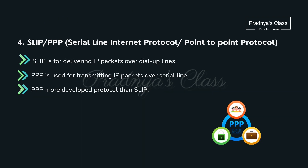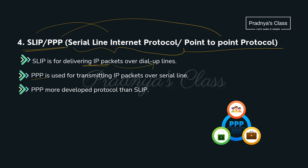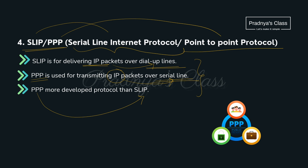Moving ahead to the fourth protocol: SLIP means Serial Line Internet Protocol and PPP means Point to Point Protocol. SLIP is for delivering IP packets over dial-up lines, whereas PPP is used for transmitting IP packets over serial lines. That's why PPP is more developed than SLIP.